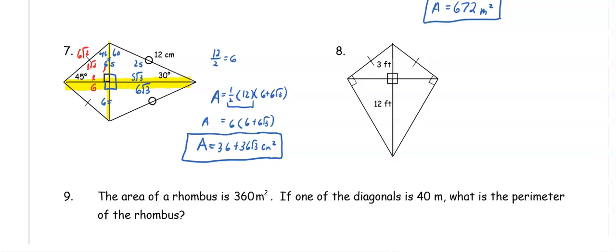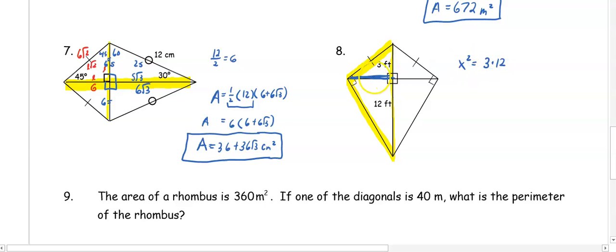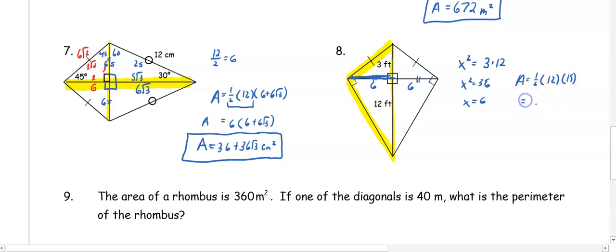In number eight, we have a kite with numbers on the longer diagonal. Focusing on half the kite, we use the altitude-on-hypotenuse theorem. The two pieces of the longer diagonal are 3 and 12. Since the half-diagonal is the geometric mean, x squared equals 3 times 12, so x squared equals 36 and x is 6. Each part of the shorter diagonal is 6, making it 12 total. The area is one-half times 12 times 15, giving 90 feet squared.